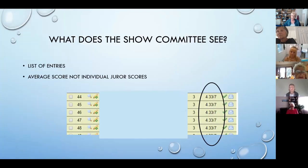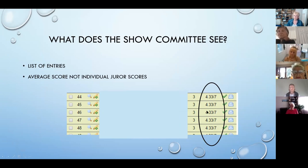For a chapter show where we may have more space, paintings scoring between threes and fours would also be included but as non-qualifying work. Once jurors have done their job, the show committee goes into the website and sees a list of entries with average scores — not individual juror scores, just the total. So you end up with fractions like 3.67 or 5.33.